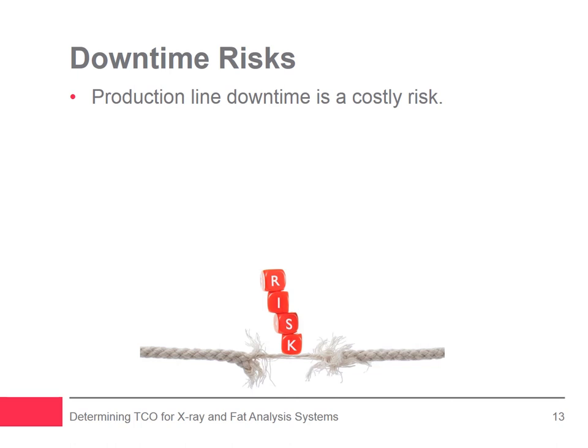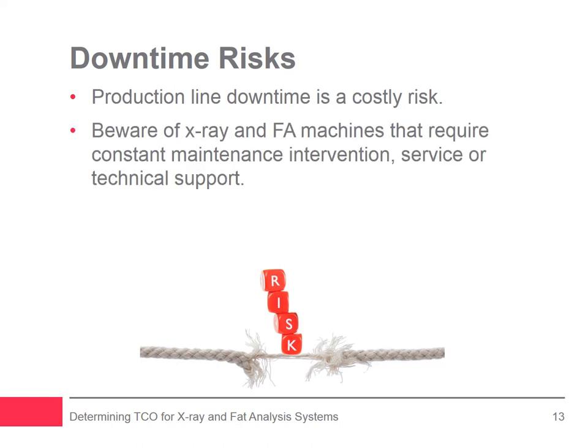The seventh variable is downtime risks. Processors and CPG companies would probably agree that beyond the cost of a recall, production line downtime is the most costly risk to the manufacturing process. Every minute counts throughout the shift, so a change of parts or altering a machine's software setup when changing over products plays into critical production minutes. Some X-ray machines come with operational sensitivities that may call for constant maintenance intervention, service, or technical support.